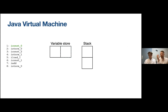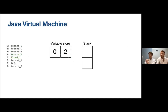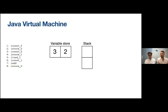In a stack, we can only put values on top or remove them from the top. The iconst_0 instruction puts a constant zero on the stack. istore_0 moves that from the top of the stack into the variable store at address zero. iconst_2 puts a constant two on the stack. istore_1 moves that to the variable store at address one. iload_1 copies the value from the variable store at address one to the top of the stack. iconst_1 puts a constant one on the stack, and iadd takes the two topmost values and replaces them with their sum. istore_0 then moves that value from the top of the stack back to the variable store.